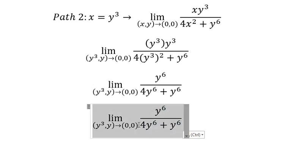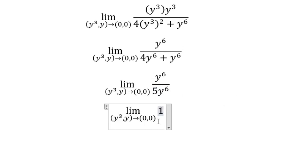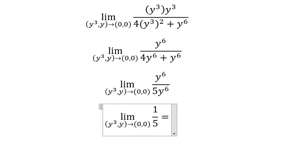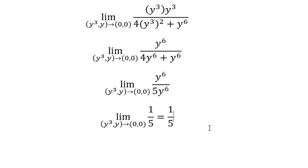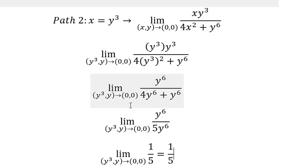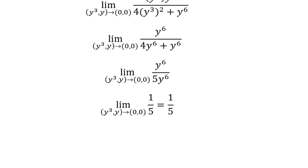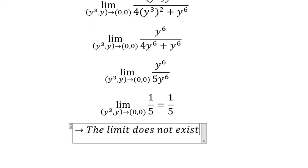This one we have number 5. Now we need to simplify and we have 1 over 5. So we see that path number 1 and path number 2 are not the same, so we can say that the limit does not exist. This is the end, thank you for watching.